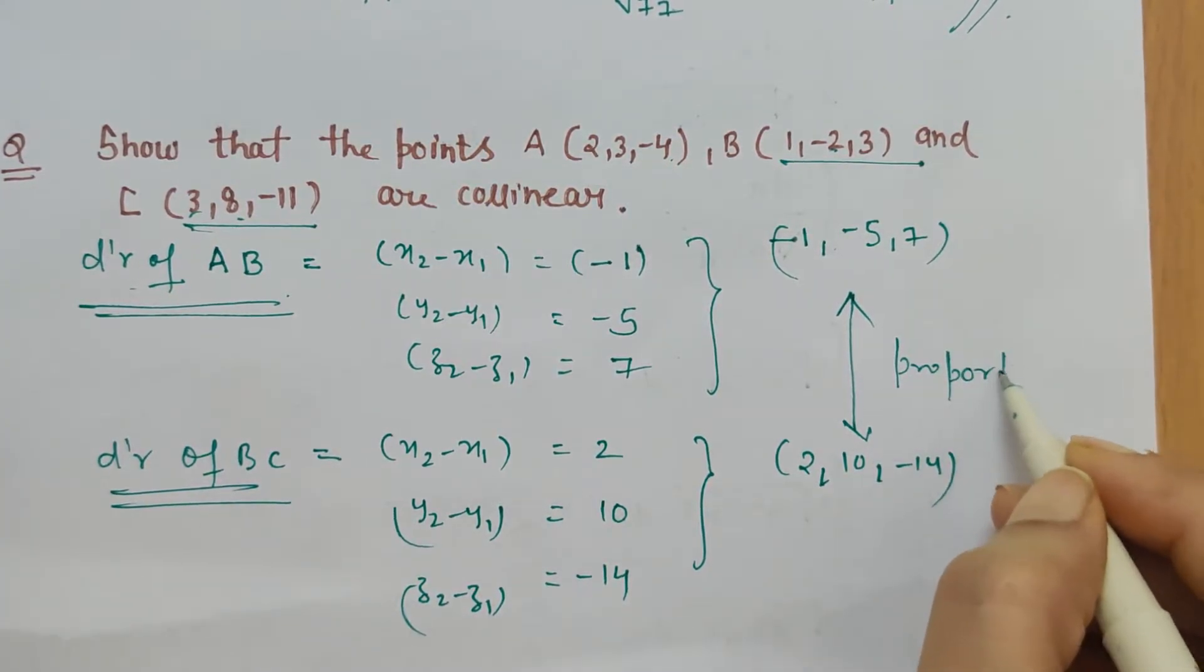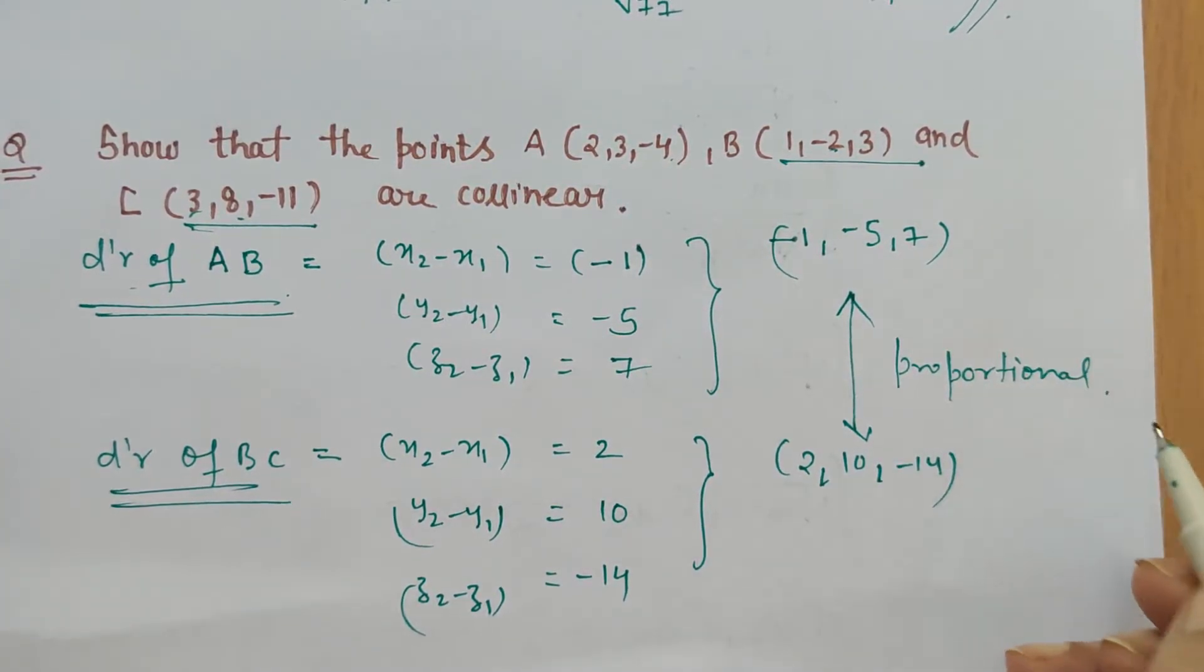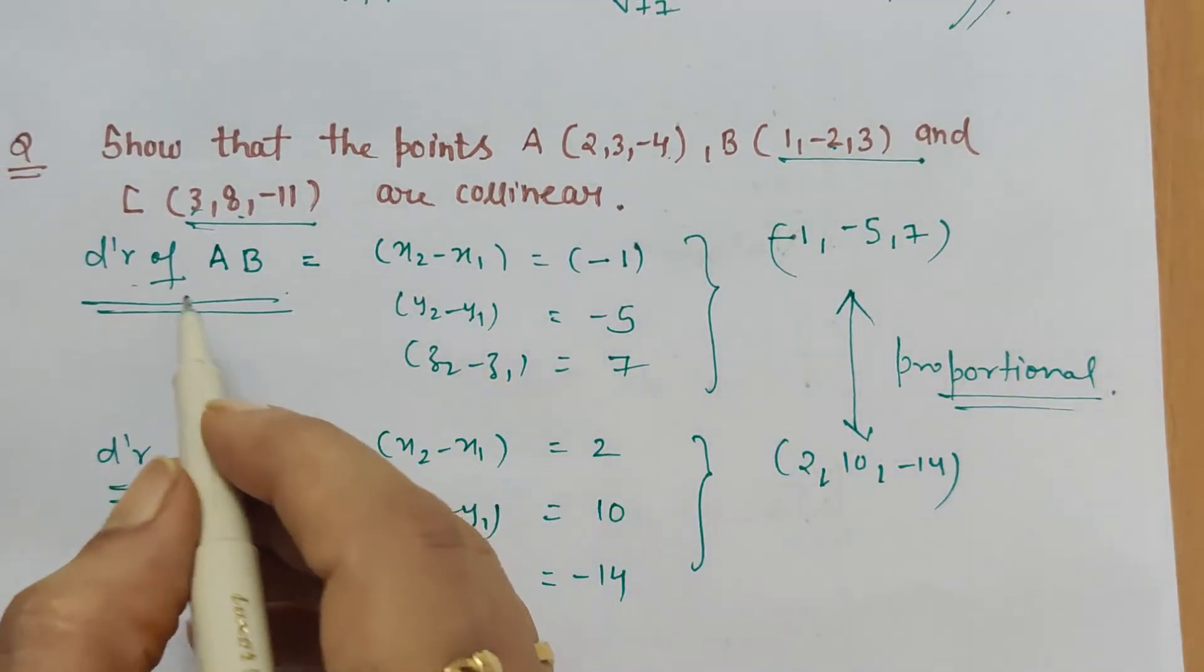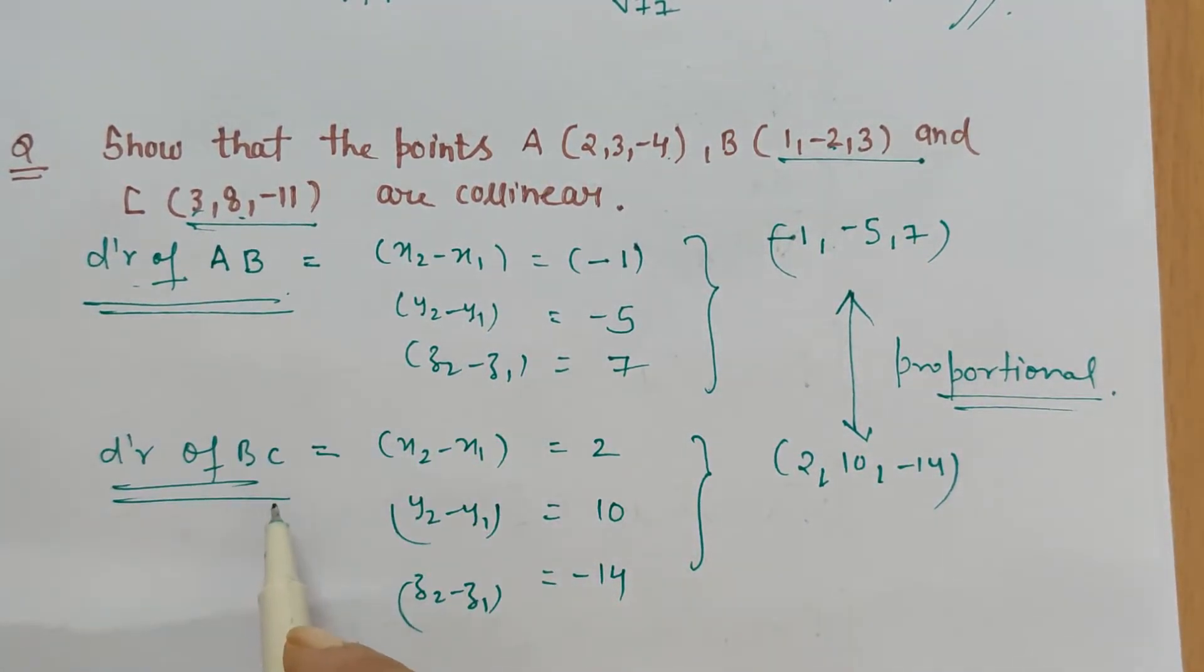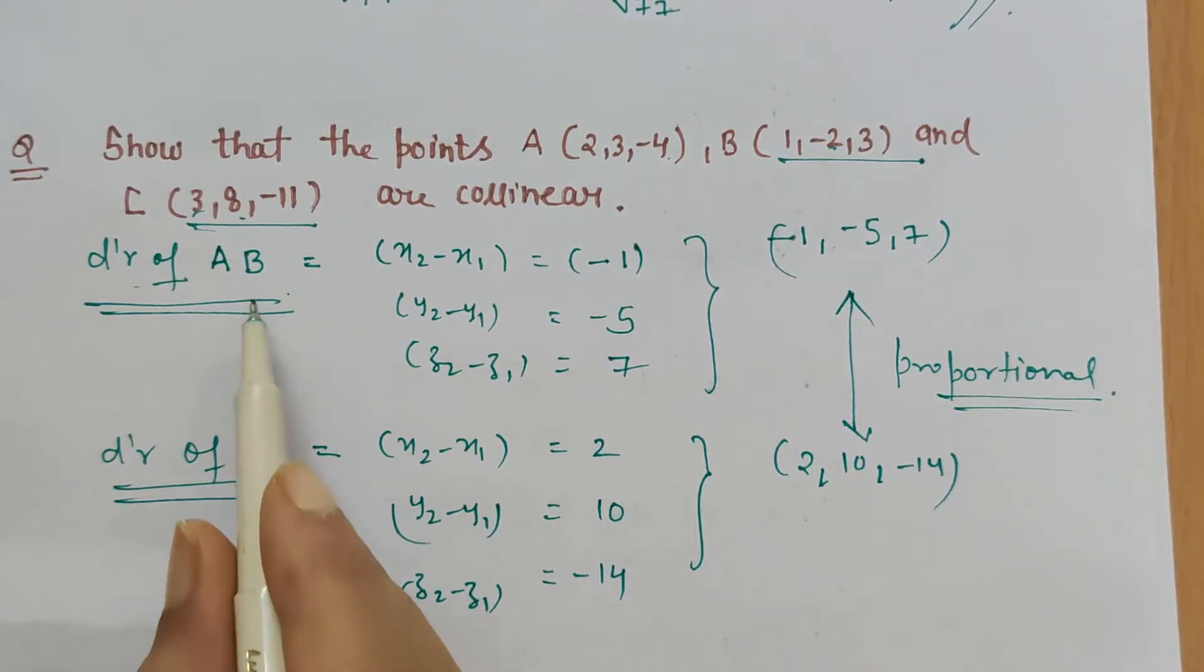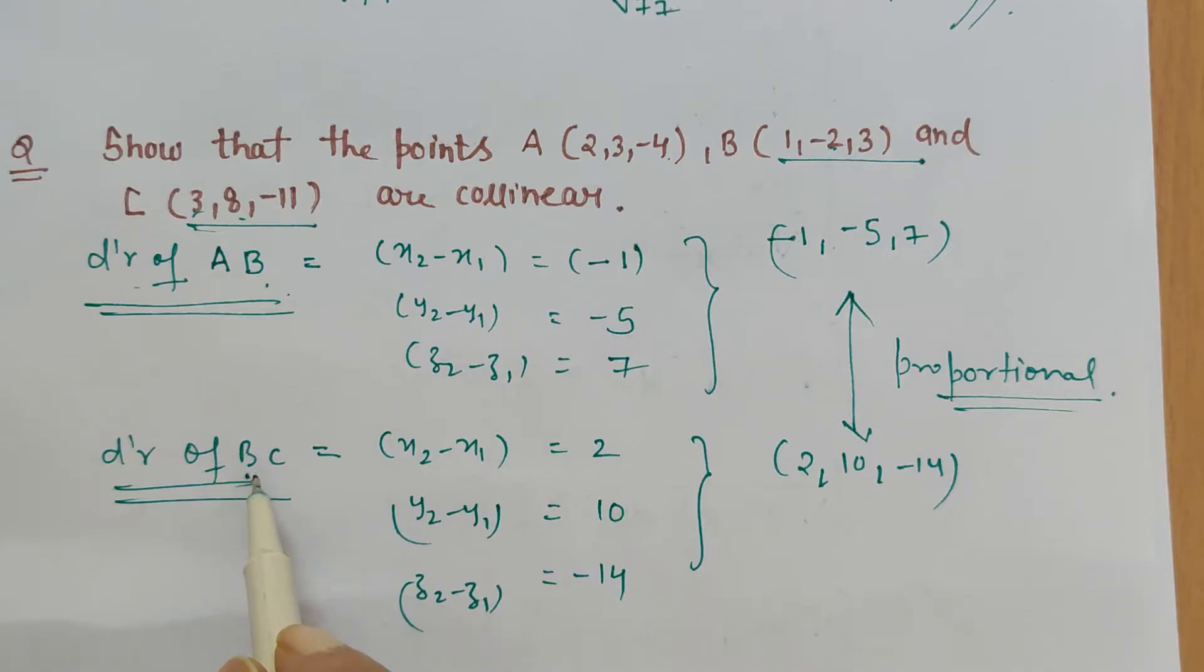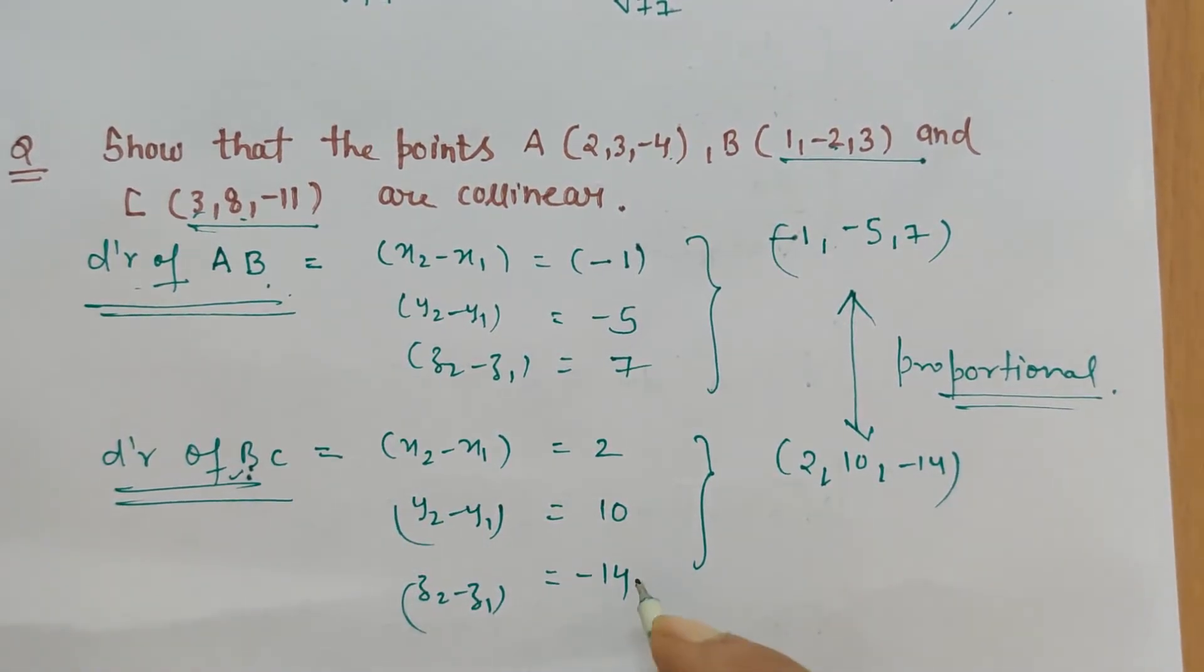The direction ratios of the line segments are proportional, which indicates that line segment AB is parallel to line segment BC. But both line segments have one common point, which is B. Therefore, they are not lying separately one above the other, but they are coinciding with each other at point B.